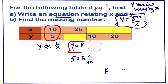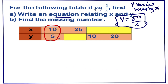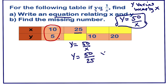Now for part (b), let us complete the table. We will use the formula y = 50/x. Here we have been given x = 25 and we need to find y. So y = 50/25, which gives us y = 2.